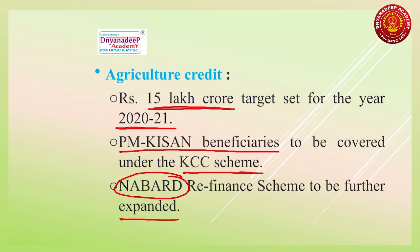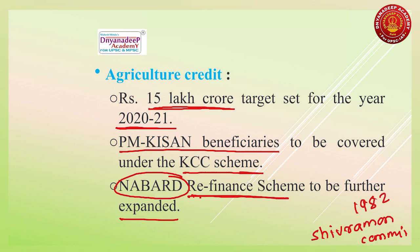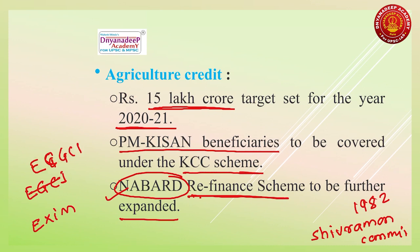Remember: NABARD was established in 1982 on the recommendations of the Shivaraman Committee. The most important point about NABARD is that it is a refinancing institution — it gives finances to institutions which disburse loans and credit to retail consumers. Like Exim Bank and ECGC (Export Credit Guarantee Corporation of India), NABARD is a refinancing institution. You will definitely get a question on which among the following are refinancing institutions.